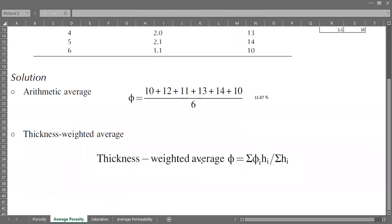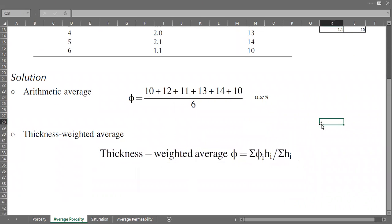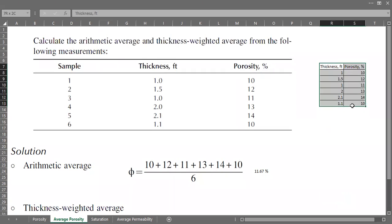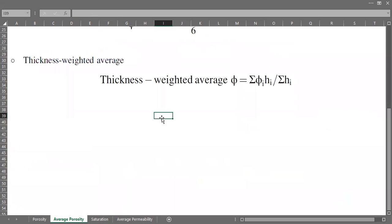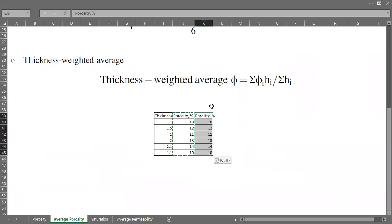We will do this calculation. I'll copy this one and create another column. I will call this 'porosity multiplied by thickness.'